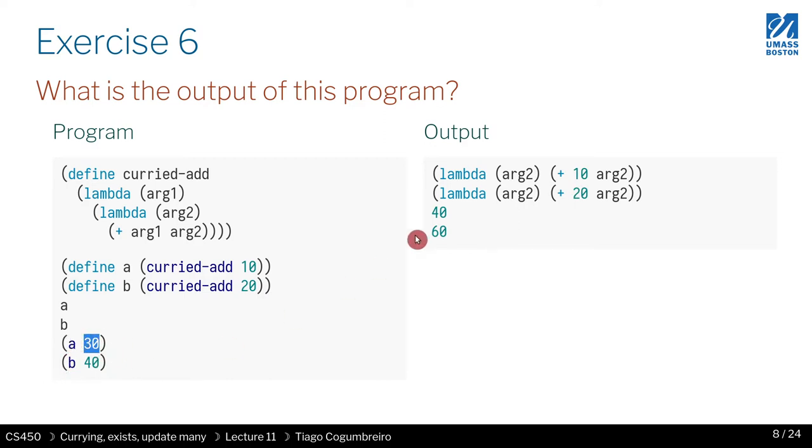I hope by now this is second nature to you. Finally we do the same exercise where we pass 30 to a and 40 to b. So a is this and b is this - again we take the body and we replace arg2 by 30, so that means 10 plus 30 and that's why we get 40. In the second example we have plus 20 and arg2 becomes 40, so 20 plus 40 equals 60. That's why we get the fourth output.